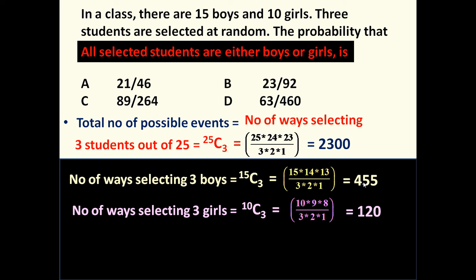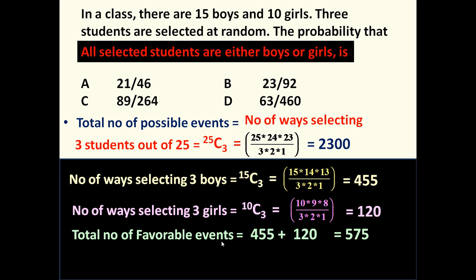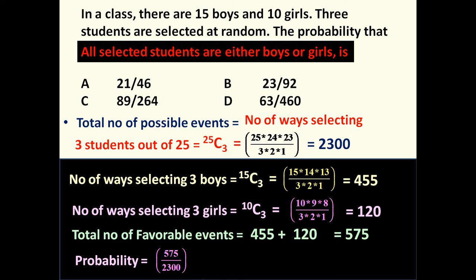These two are mutually independent — either boys will be there or girls will be there. So the total number of favorable events is 455 plus 120, equal to 575. The required probability is 575 divided by 2300, and if we simplify this we get 23/92. So the answer is 23/92.